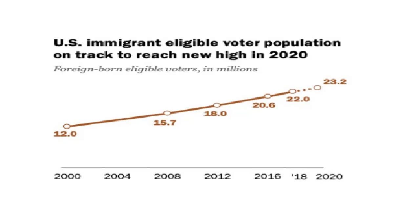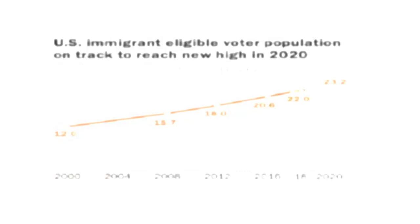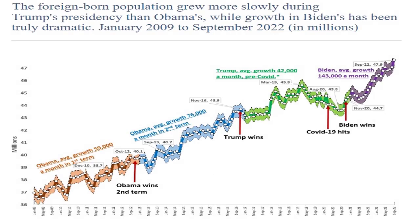So does that impact elections? During Obama's first term it was 59,000 immigrants per month, and the second term 76,000. Trump basically held it somewhat evenly or slowed it down, and of course under Biden it has doubled since the Obama administration. A lot of people have been reporting on that.